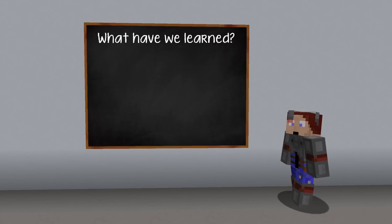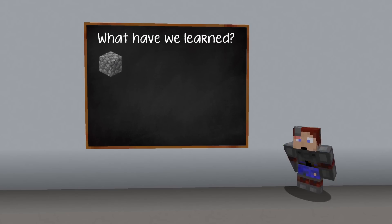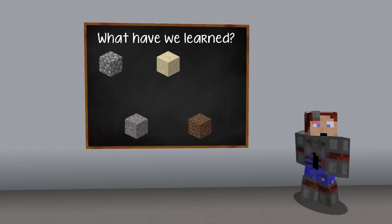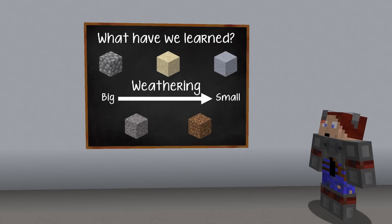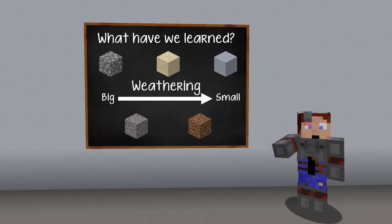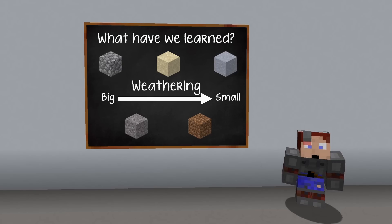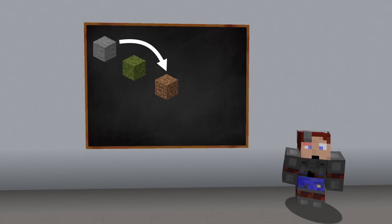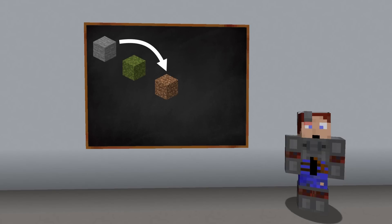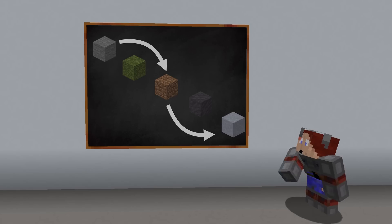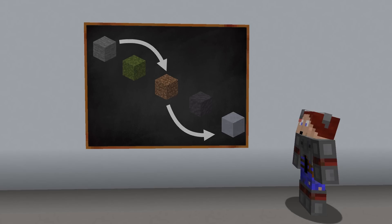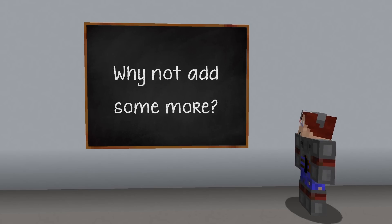So what have we learned? The major difference between cobble, gravel, sand, dirt, and clay is the particle sizes present, and weathering processes transform large particles down into smaller ones. We already have a few of these processes in Minecraft — namely, biological weathering for turning stone into dirt using moss, and a form of water-based weathering from dirt to clay when it's saturated into mud.